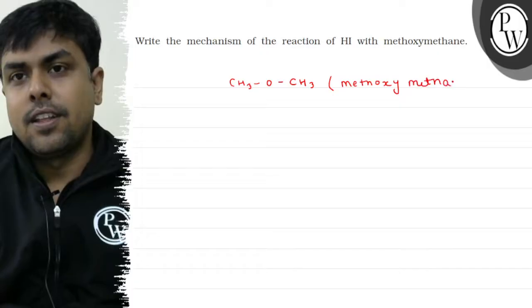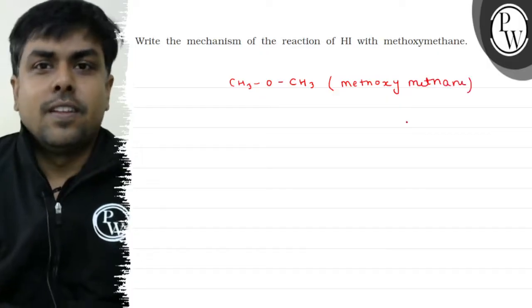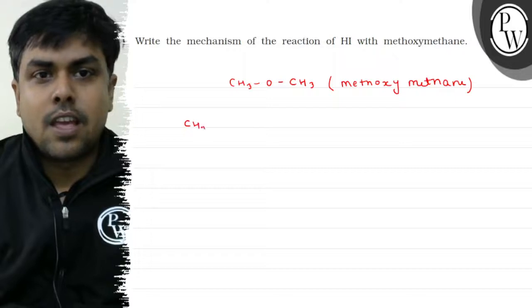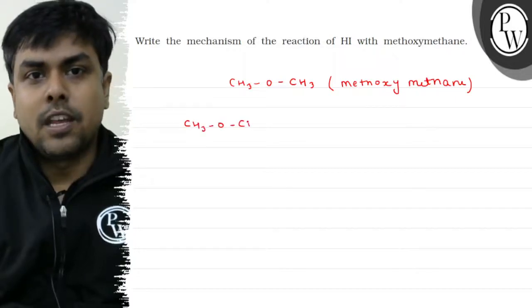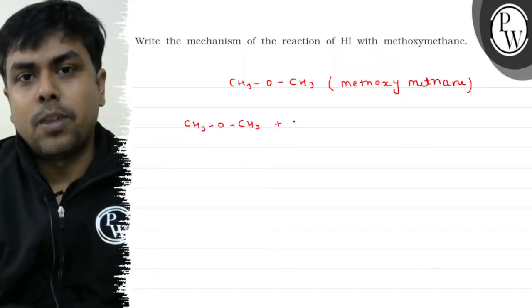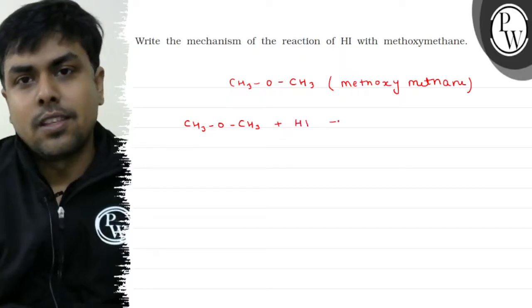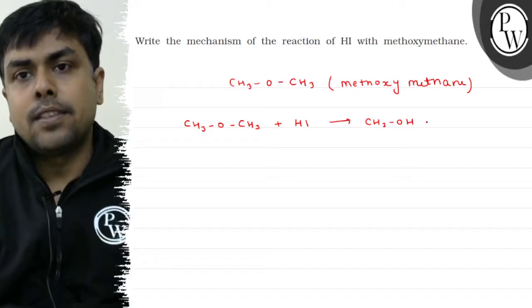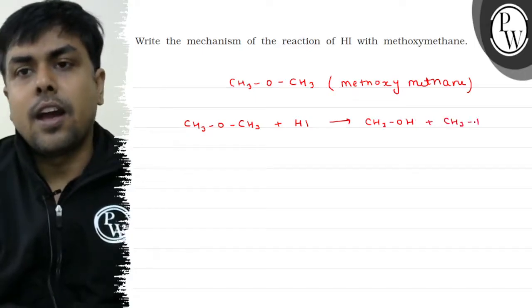Now, let's write the reaction. CH3-O-CH3 on treatment with HI gives CH3-OH plus CH3-I.